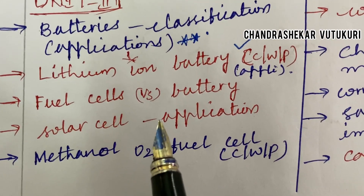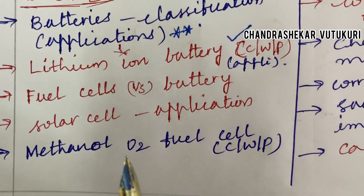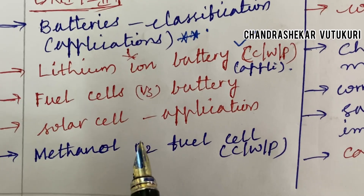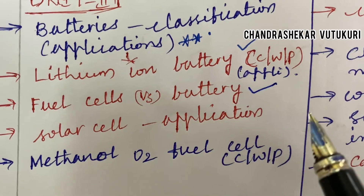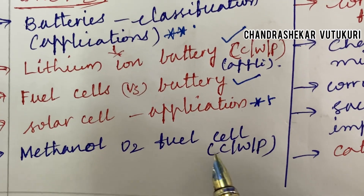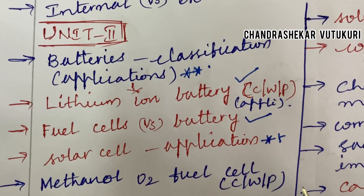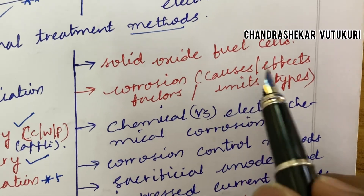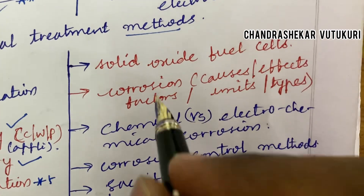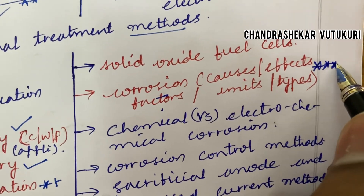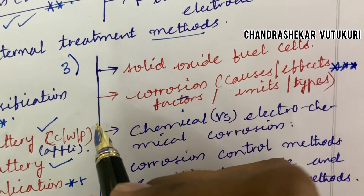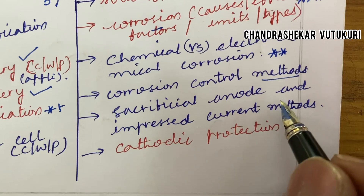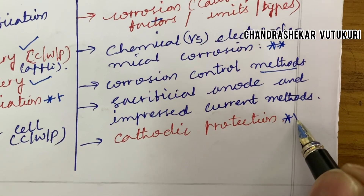I have uploaded a video on this channel on how to work out a theory paper and a mathematical paper to score good marks, which I will share in the comment section. Fuel cells versus battery differences. Solar cell and its applications. Methanol-oxygen fuel cell construction and working principle. Solid oxide fuel cells. Corrosion — its causes, effects, factors, and types — is a topmost question appearing in the third question AB or CD. Chemical versus electrochemical corrosion, corrosion control methods, sacrificial anode, impressed current methods, and cathodic protection may be short questions.